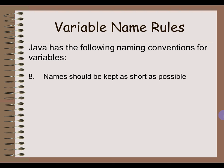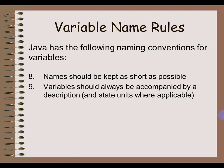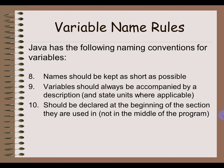Eighth, variable names should be kept as short as possible, because you'll get tired writing out a 25-letter variable name every time you use it. Ninth, variables should always be accompanied by a comment describing what that variable is going to be used for every time you declare it — we'll talk about how to write comments in a future lesson. And the last rule is that variables should be declared at the beginning of the section they're used in — declare all your variables together at the beginning of your code. That's it — that's the introduction to variables, and we'll talk tomorrow about how to use them in our programs.